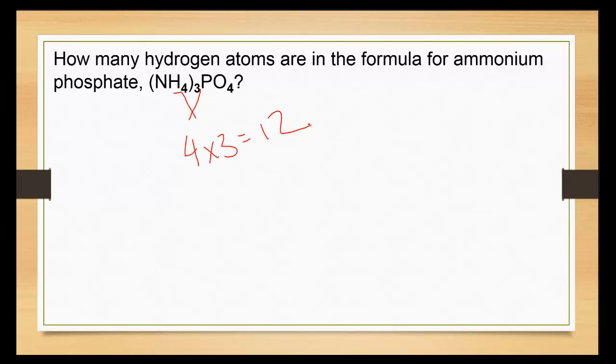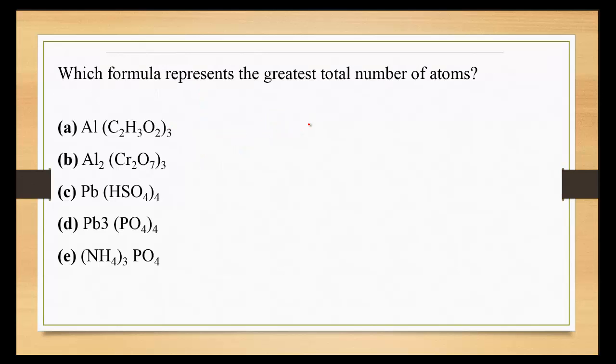Which formula represents the greatest number of atoms? So, we go through these individually. We have 1 for the aluminum. 2 times 3 is 6. 3 times 3 is 9. 2 times 3 is 6. So, 9 plus 6 is 15, plus another 6 is 21, plus another 1 is 22.